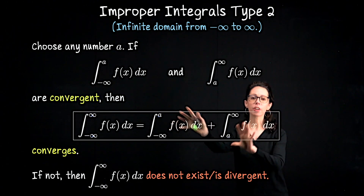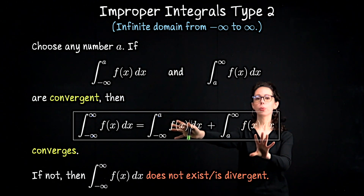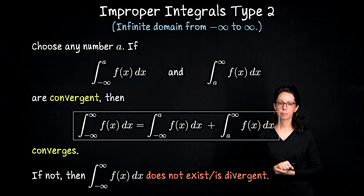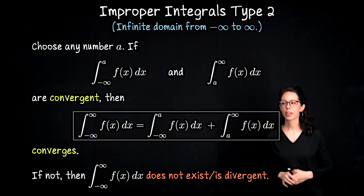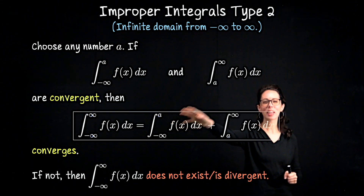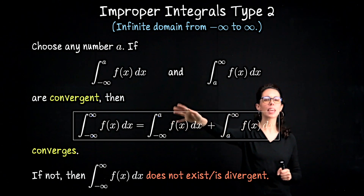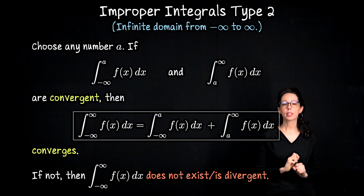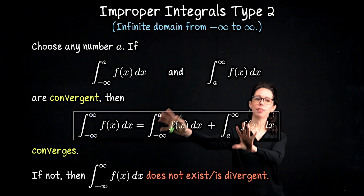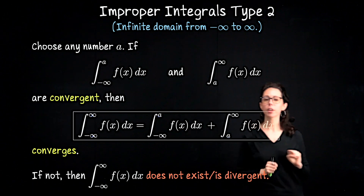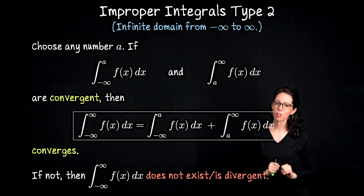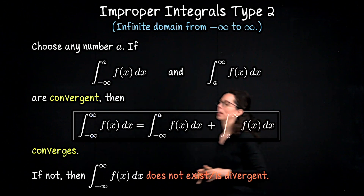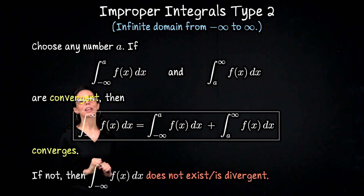If either of these diverges on its own, then the overall integral diverges. What you cannot have is one piece going to infinity and the other going to negative infinity and having them cancel each other out. That's not what we're going to do. We need each of these to individually converge. Then if they both do, we add them together and say that the improper integral from negative infinity to infinity converges.